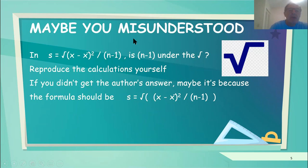Maybe you misunderstood something. Here's the formula for standard deviation of a sample. It's s equals the square root of some terms divided by n minus one. The issue is, is the n minus one under the square root sign or not? So again, reproduce the calculations yourself. If you get the author's answer, that's fine. If you didn't get the author's answer, maybe it's because you misunderstood that n minus one part. In fact, the true formula has the n minus one under the square root sign.